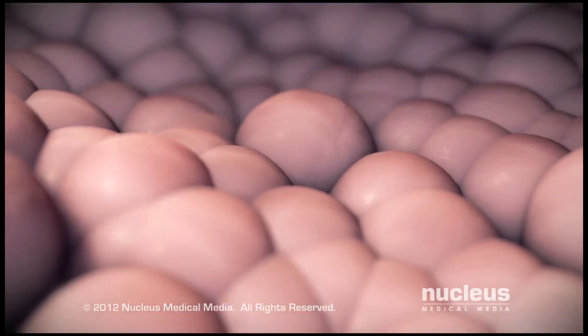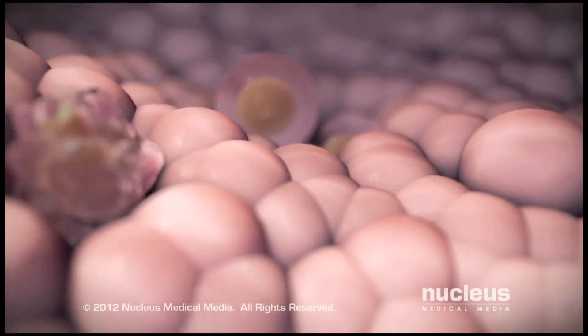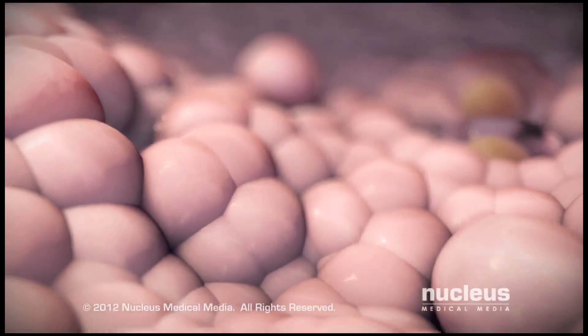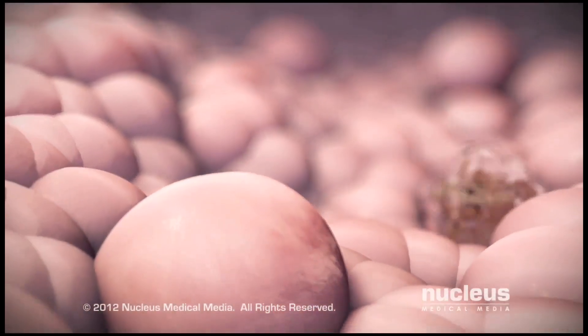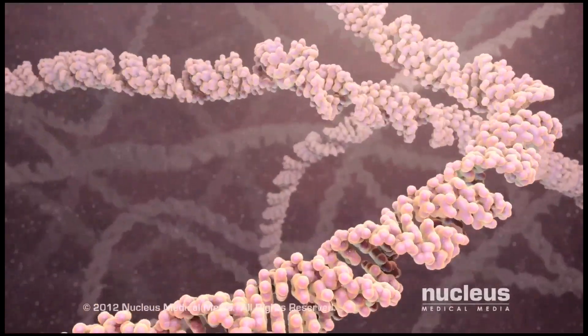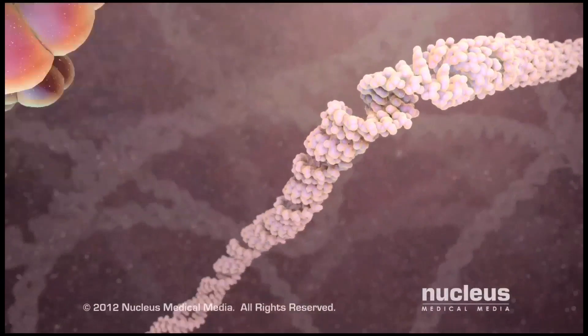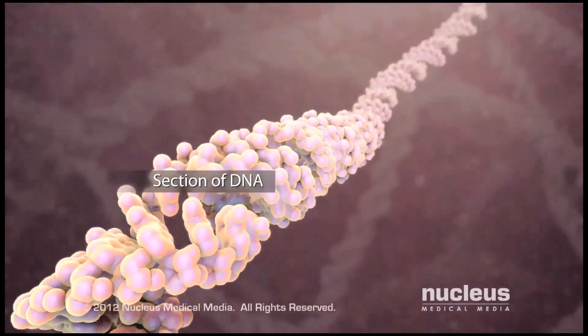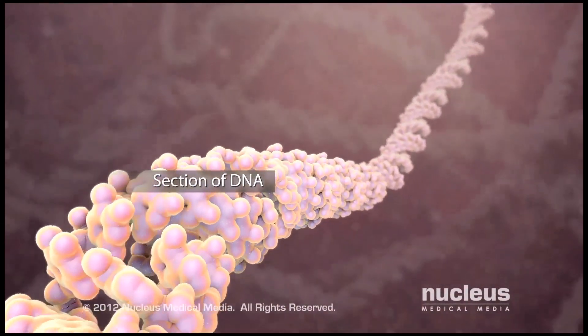The cells in the body grow and divide as part of the normal cell cycle. The cell's nucleus controls this process. Inside each nucleus, genetic material called DNA contains the instructions for directing this process.